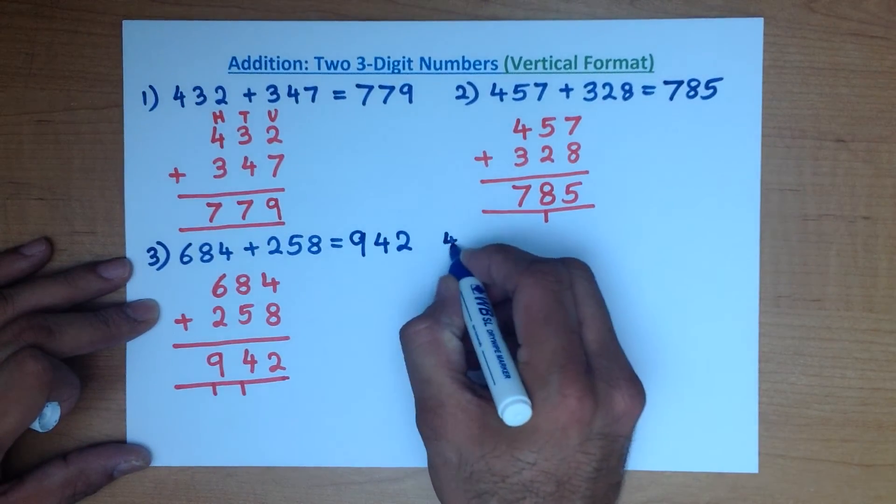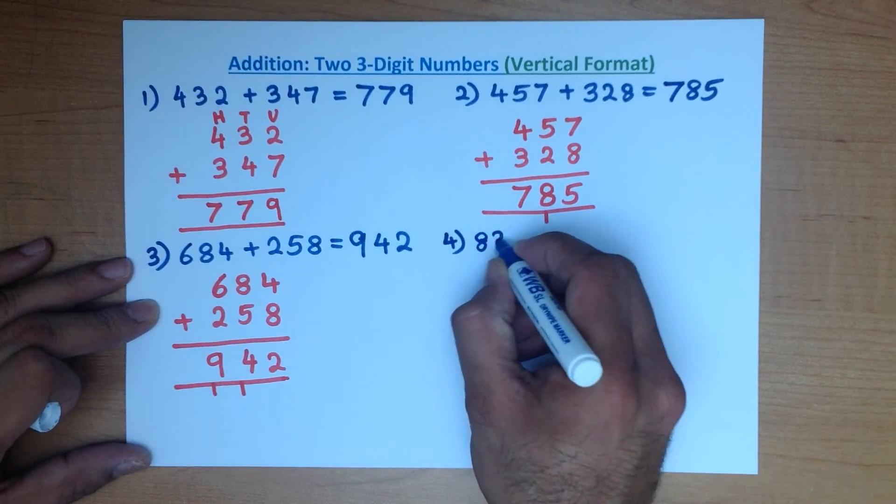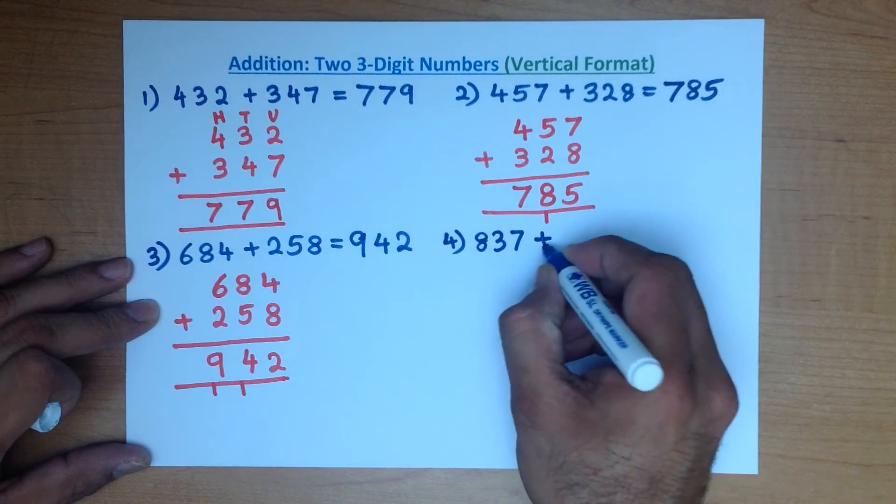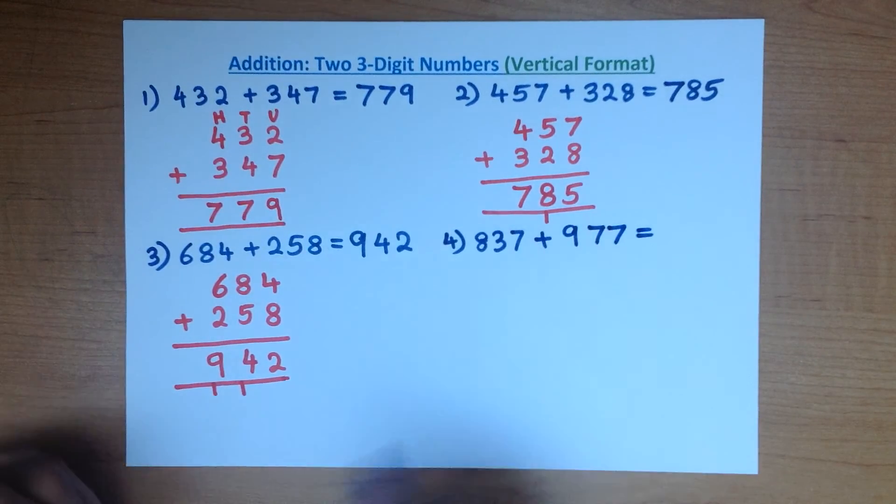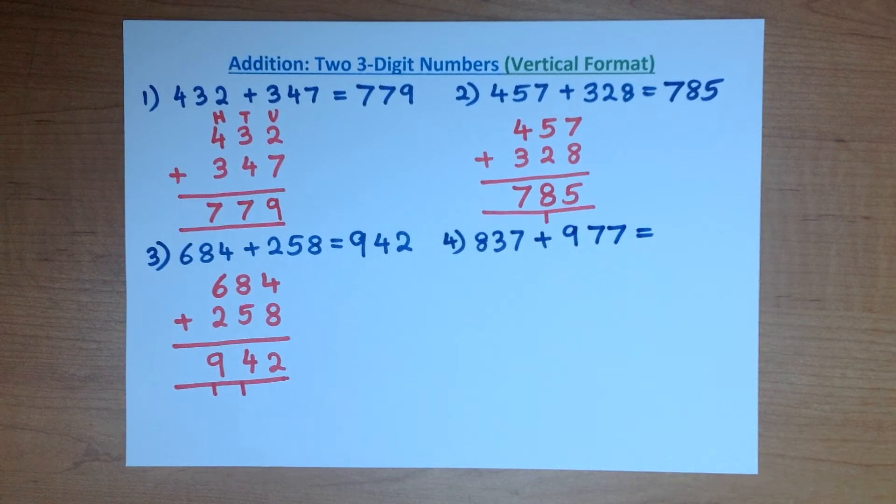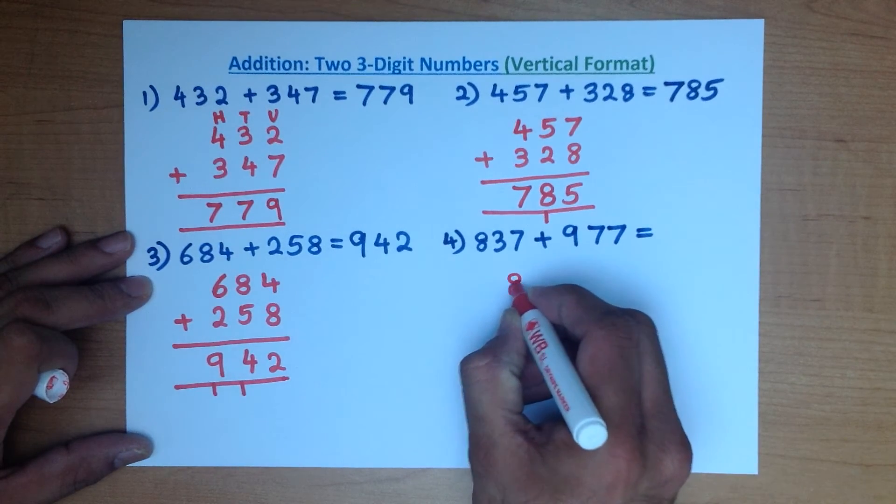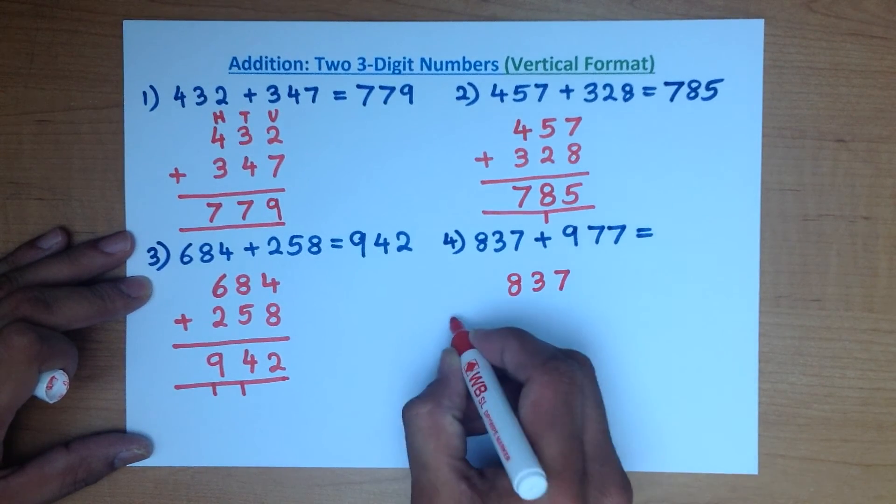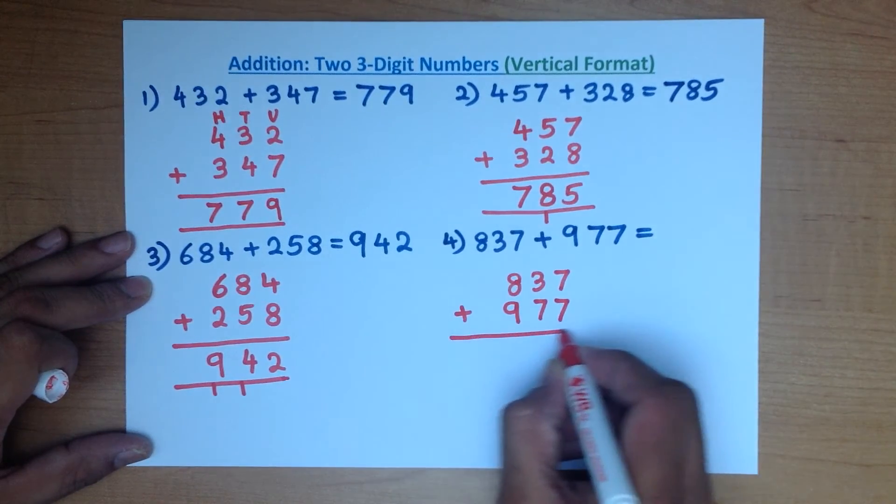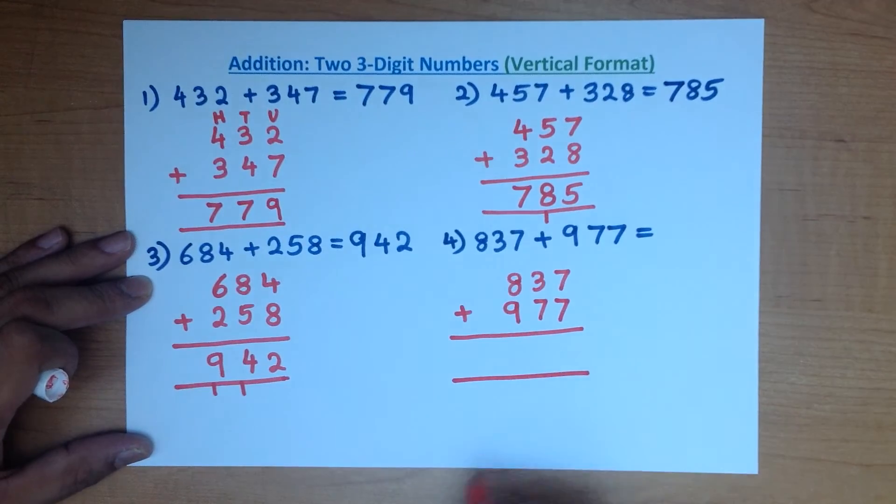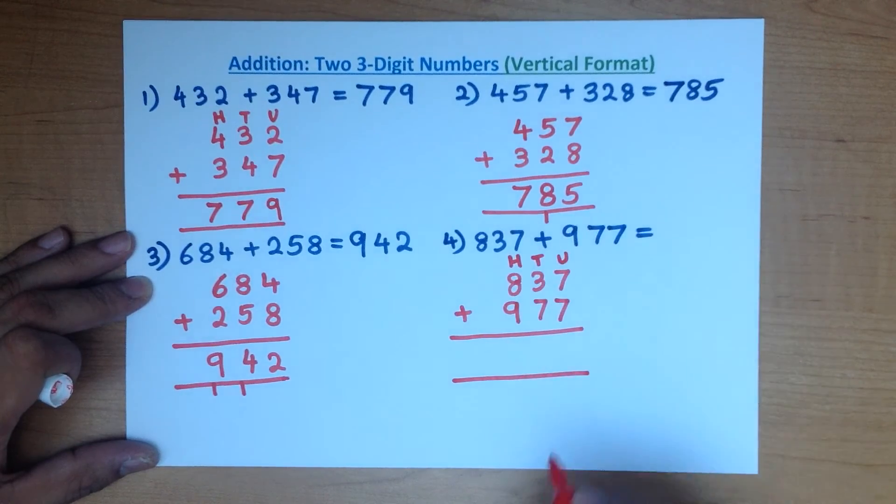Let's try one final example. What is 837 plus 977? What is 837 plus 977? We got large numbers there. Does it look difficult? Let's go through this. 837 plus 977. Let's label the columns in this one: units, tens, and hundreds.